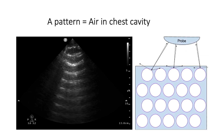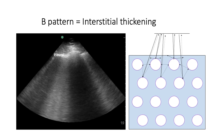The A pattern is demonstrated by multiple horizontal lines. This occurs due to strong reflection between the pleural interface and the probe, creating this reverberation artifact. The B pattern appears as multiple vertical lines. This occurs due to interstitial thickening, enabling a circular reflection at the pleural interface, which the machine interprets as this appearance.